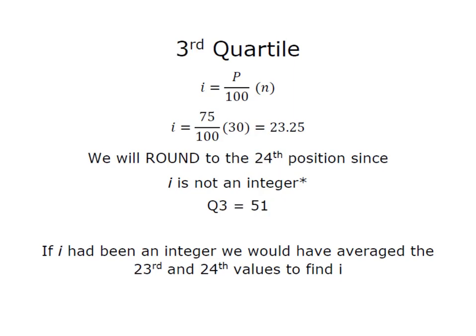So I'm going to use the same procedure to find my third quartile, remembering that my third quartile is the same thing as P75. So I'm simply going to take my 75 divided by 100 times 30 and that's 23.25. Again, not an integer, so rounding to the 24th position, counting down from the smallest towards the largest value, I find that Q3 is 51. Always remember if i had been a whole number you would have simply averaged the 23rd and the 24th values.